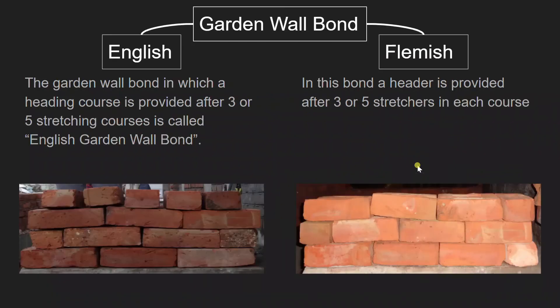The next type of bond is garden wall bond. There are two types of garden wall bonds. The first one is English garden wall bond. The garden wall bond in which a heading course is provided after three or five stretching courses is called English garden wall bond. In the image, we see that there are three stretching courses laid one on another, and then we have a header course — so this becomes English garden wall bond.